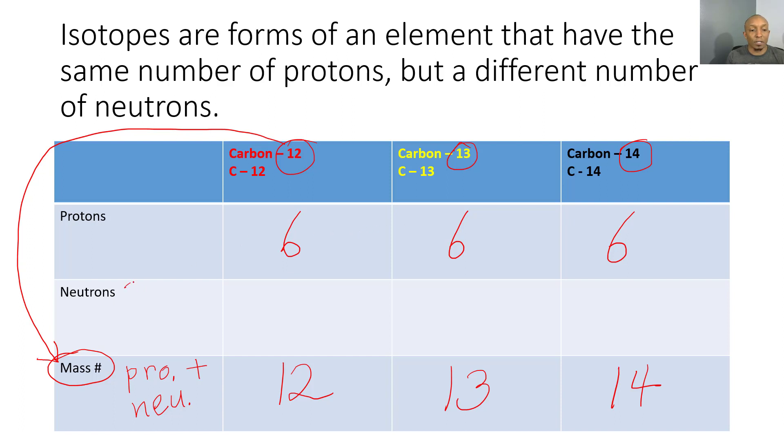So the last thing we need to figure out is our number of neutrons. How do we find that out? It's quite simple. We ask ourselves: 6 plus what gives us 12? That's 6. 6 plus what gives us 13? 7. And 6 plus what gives us 14? 8.